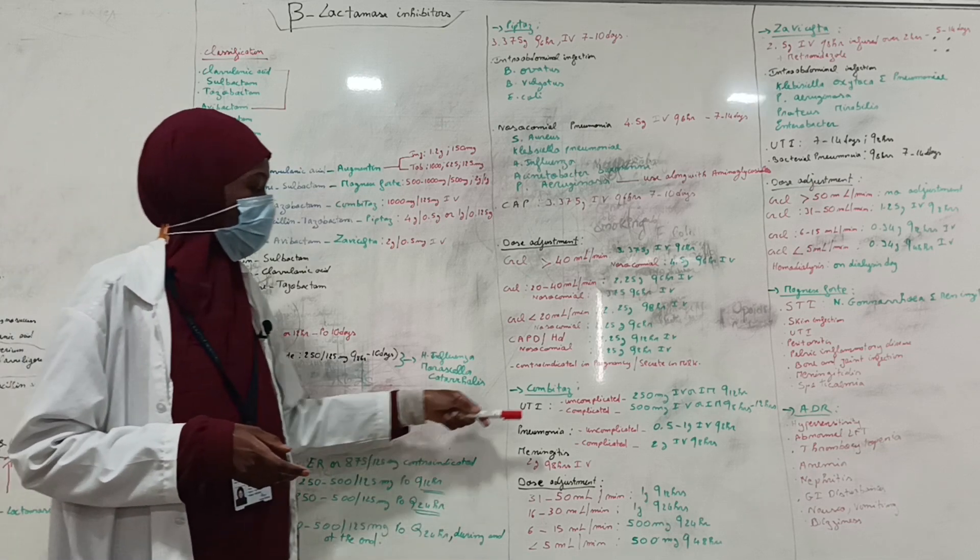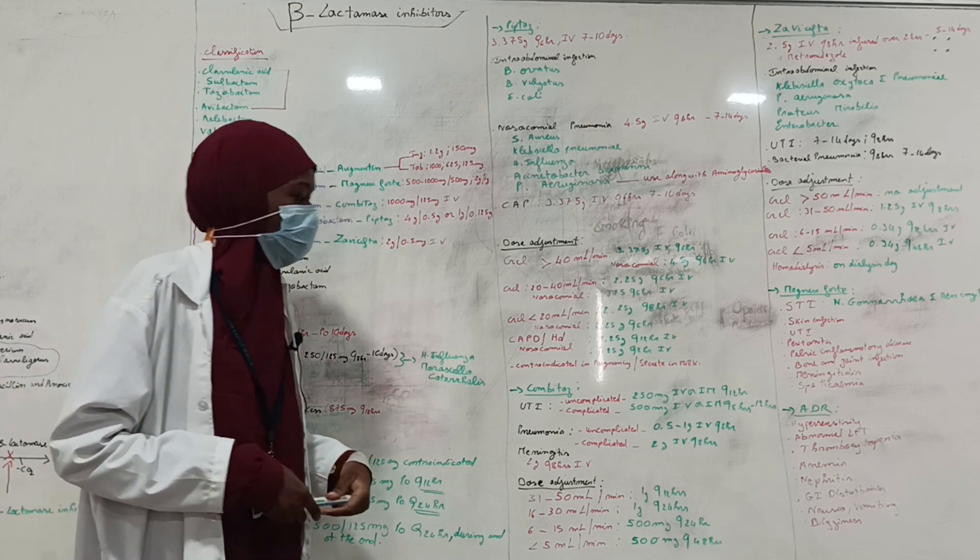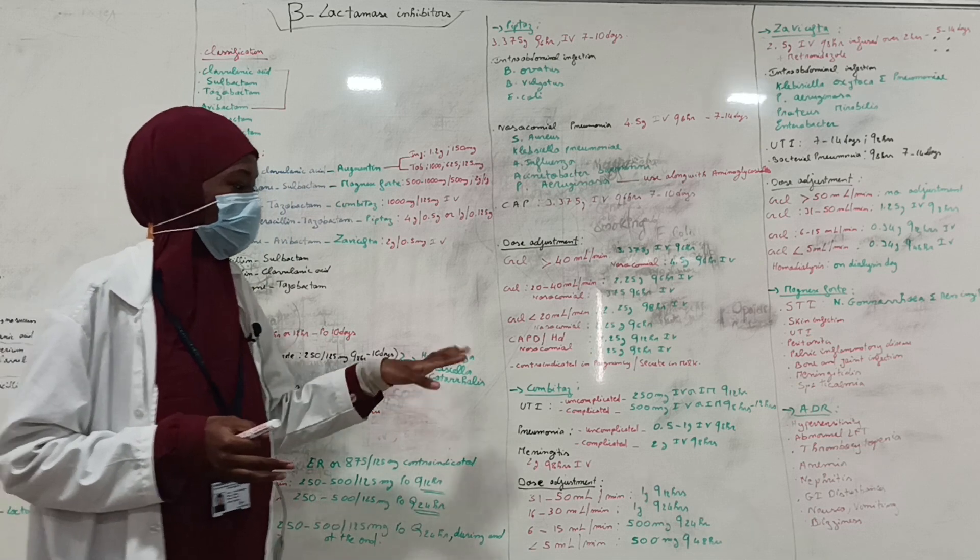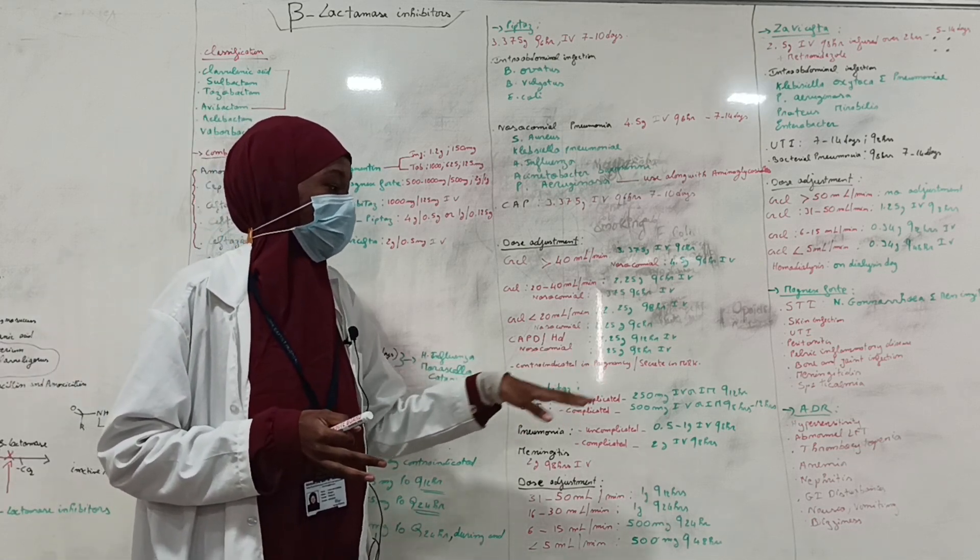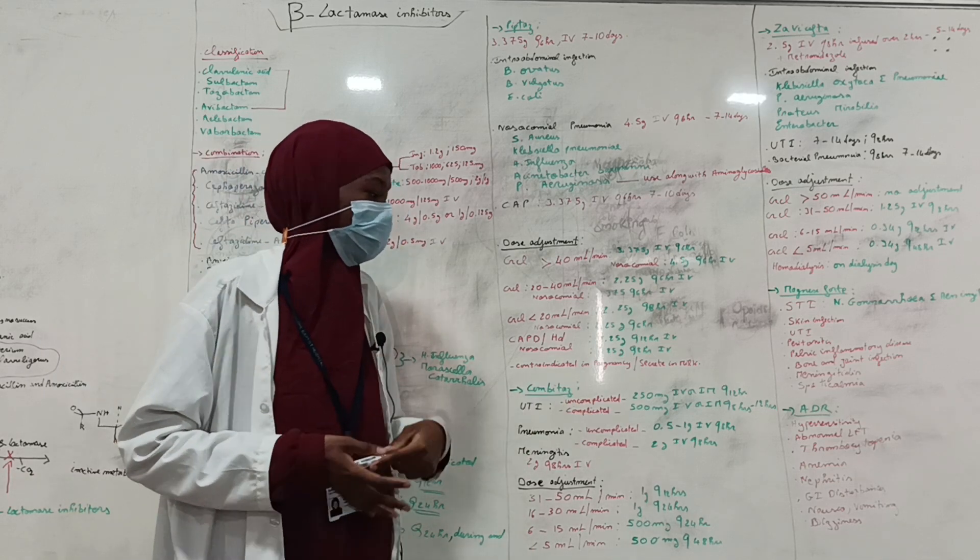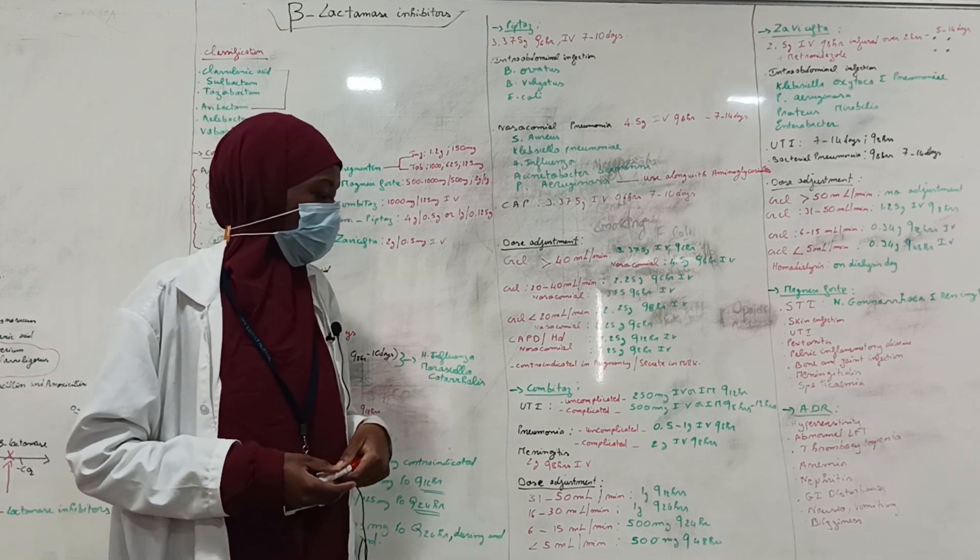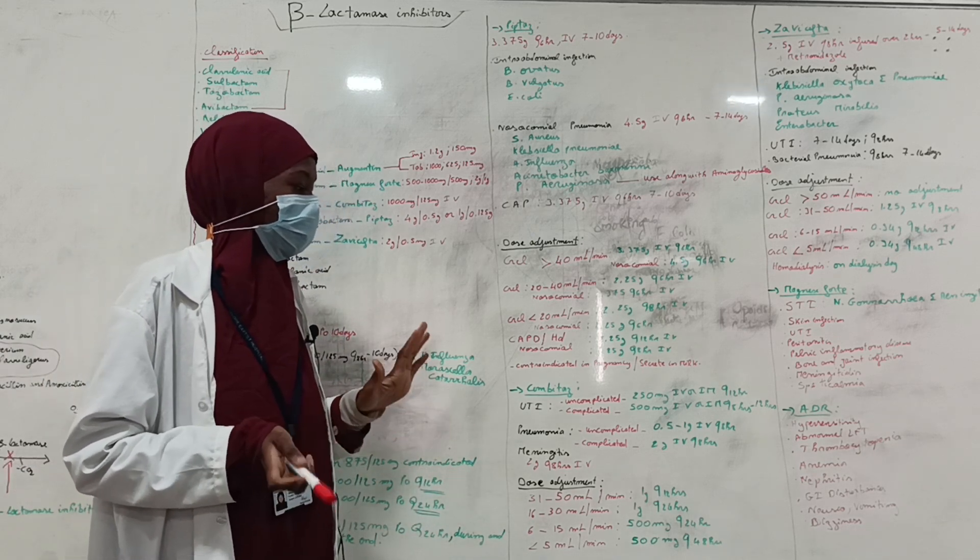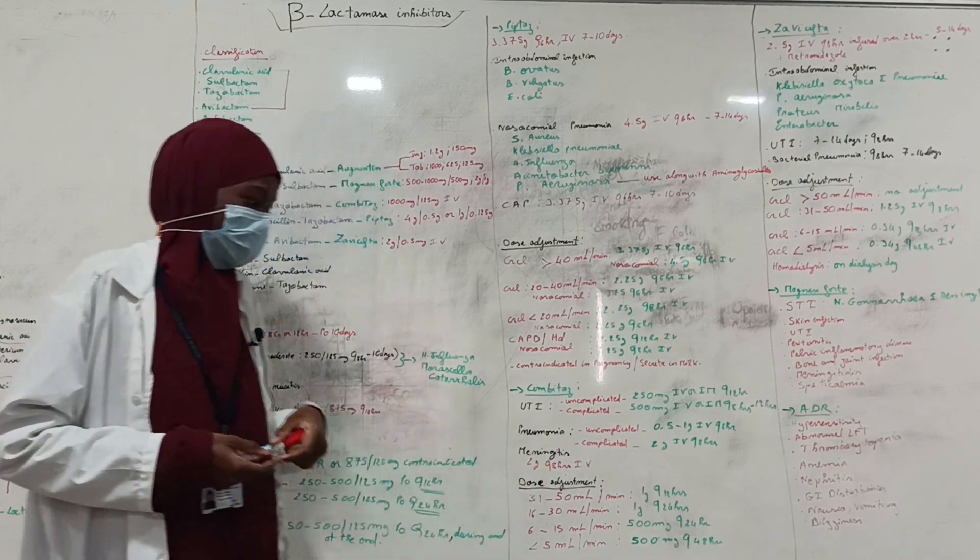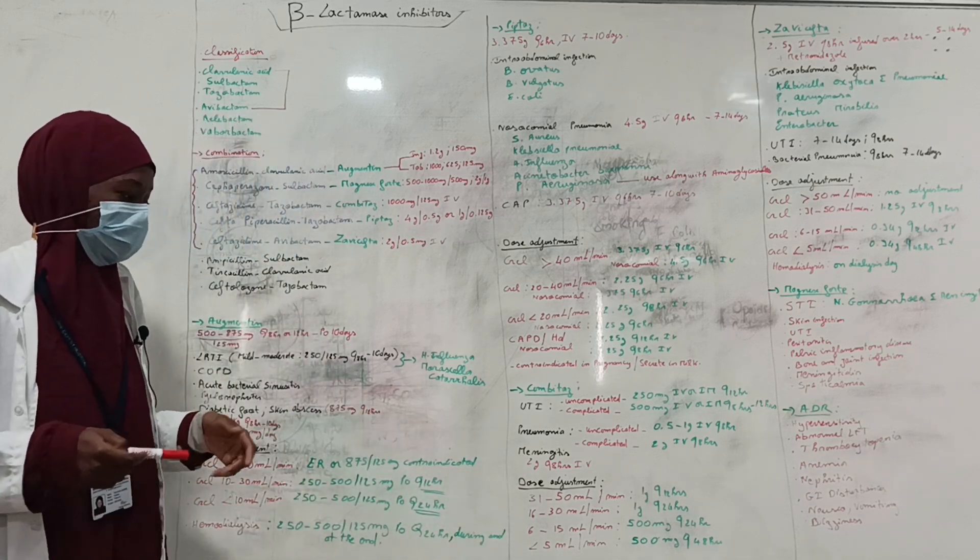When it comes to Combitaz, which is ceftazidime along with tazobactam, it's indicated for UTI. For uncomplicated cases, 250 mg can be given IV or intramuscularly every 12 hours. For complicated infection, 500 mg IV or IM every 8 to 12 hours is recommended. For pneumonia, uncomplicated, 0.5 to 1 g IV every 8 hours. For complicated cases, 2 g IV every 8 hours. For meningitis, 2 g every 8 hours IV is recommended.